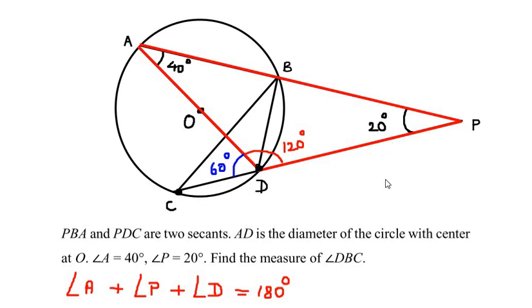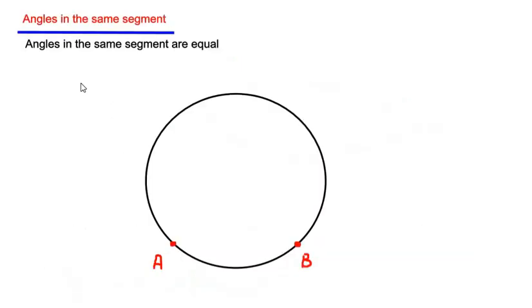Now that we have angle ADC as 60 degrees, let us try to find angle ABC. To find it, we have to use a circle theorem known as the angles in the same segment theorem. It states that angles in the same segment are equal.